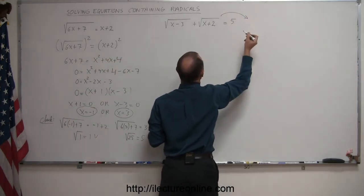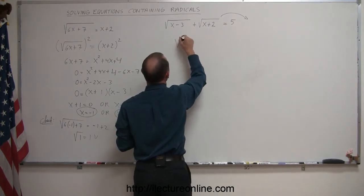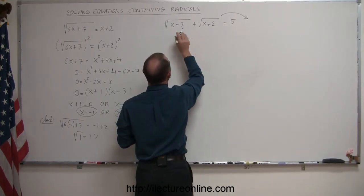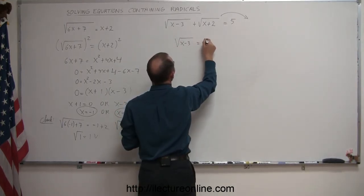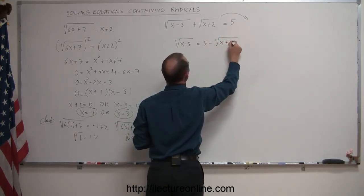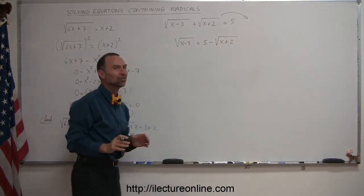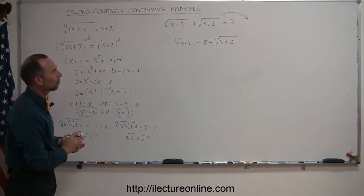So let's try that. We're going to move this over here and then square both sides. So let's take the square root of x minus 3, which stays on the left side, equals 5 minus the square root of x plus 2. It is definitely an easier, simple way to use this approach.